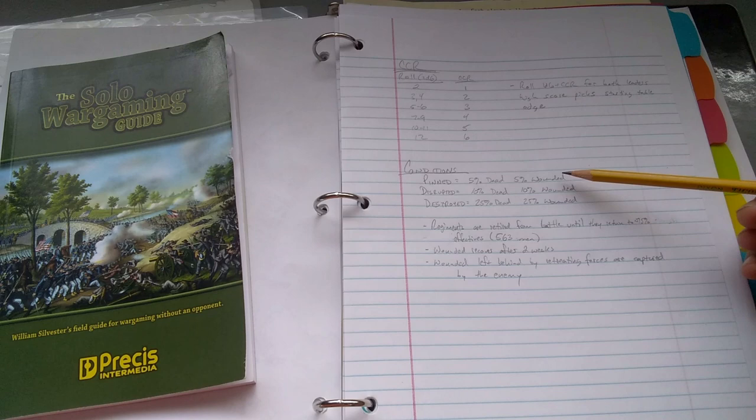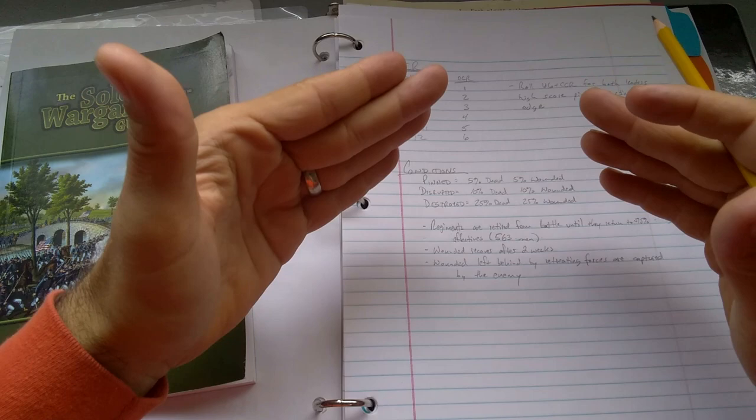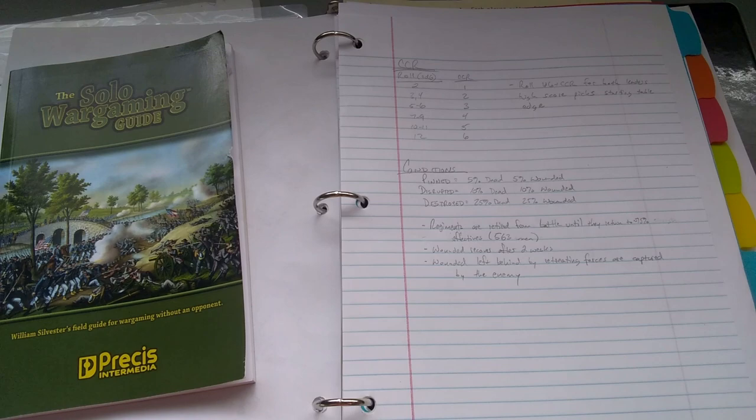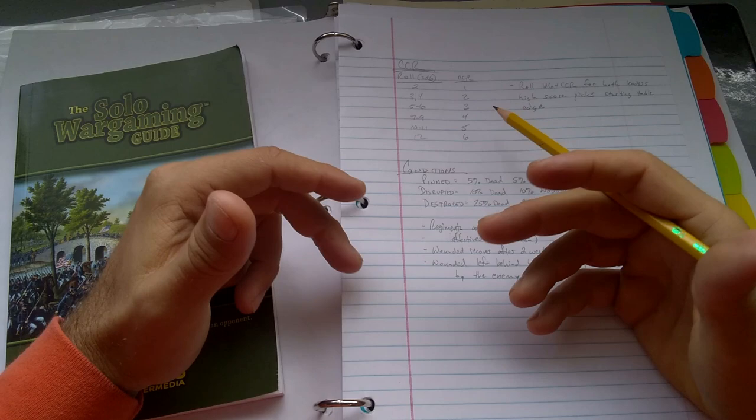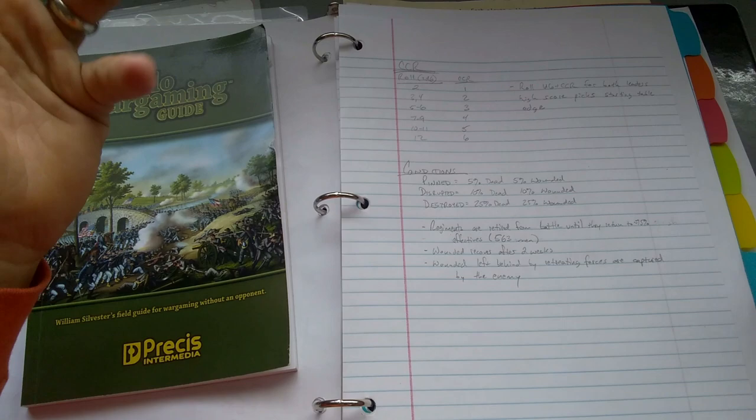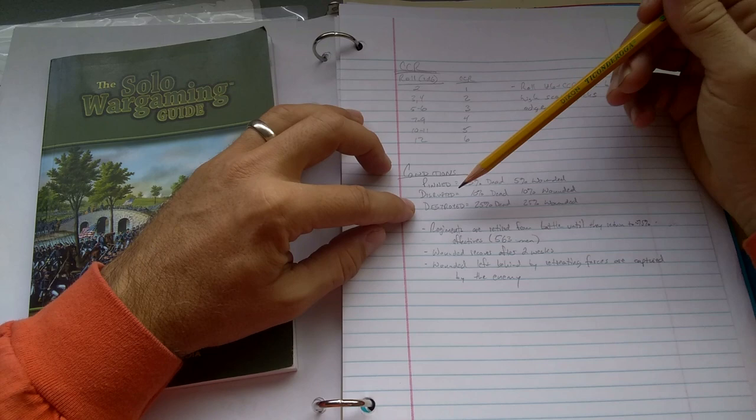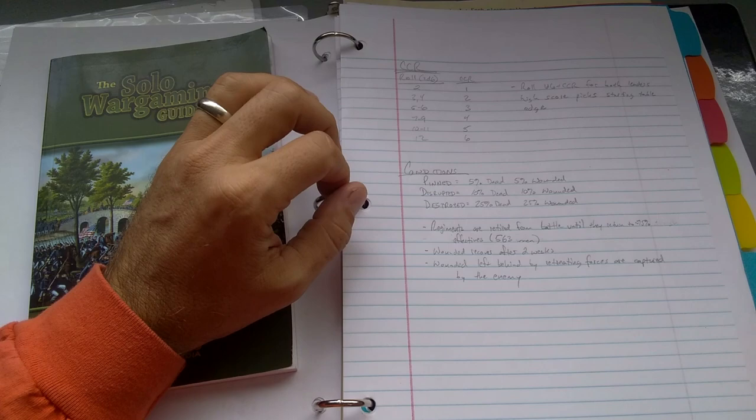Any unit that ends a game pinned will be considered to have lost 5% of their number dead and 5% wounded. We should talk about what wounded means. Wounded will recover after 2 weeks. They can return to service after 2 weeks if you control the battlefield. If you retreat, if you're routing from the battlefield, then you have to leave your wounded behind. Those wounded become captured by the enemy or are effectively out of the campaign.